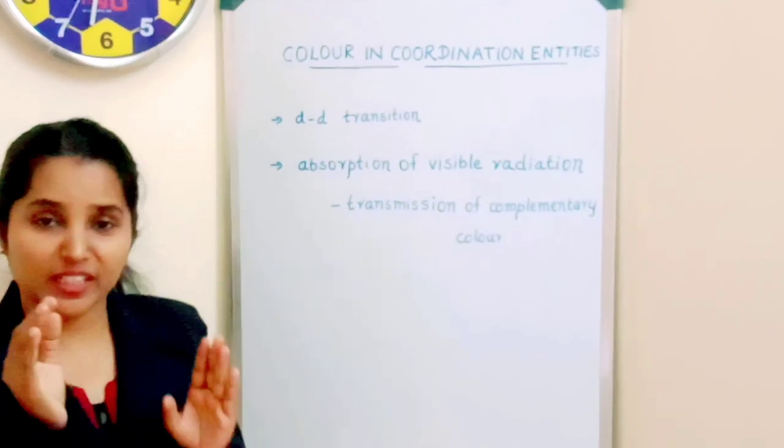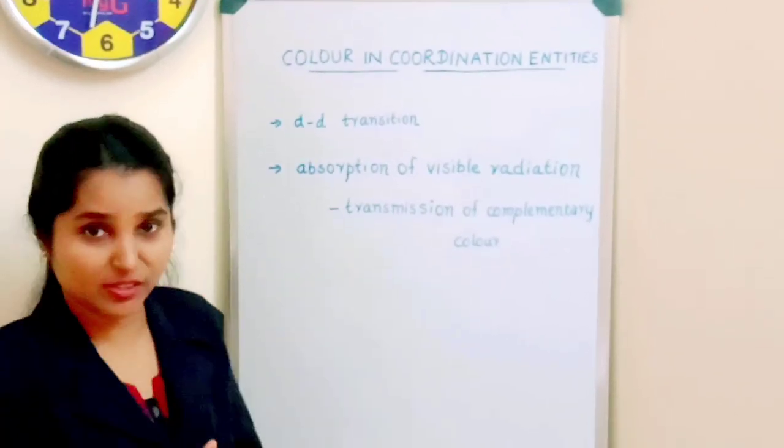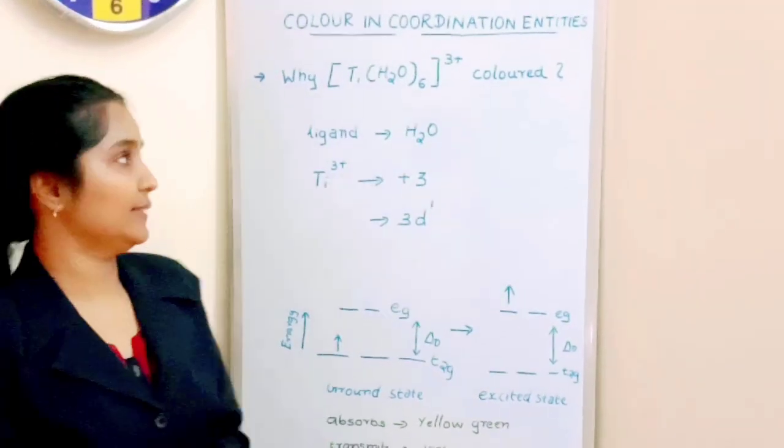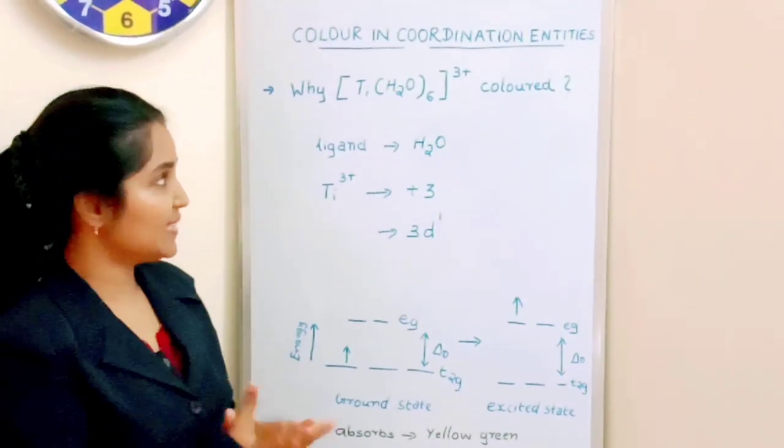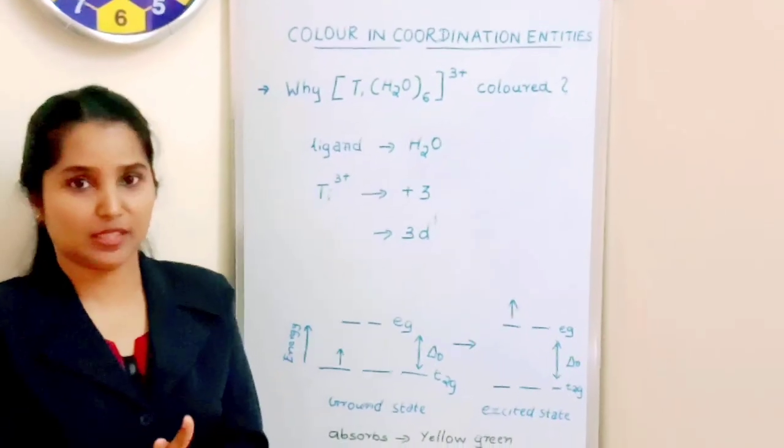The color in coordination entities is solely based on DD transitions. We will explain with an example what we discussed earlier about DD transition and formation of color in coordination compounds.